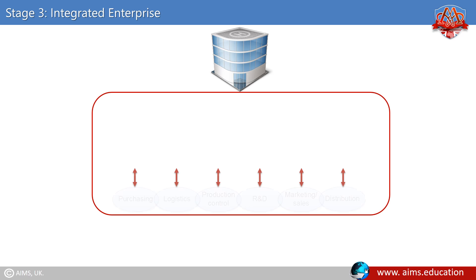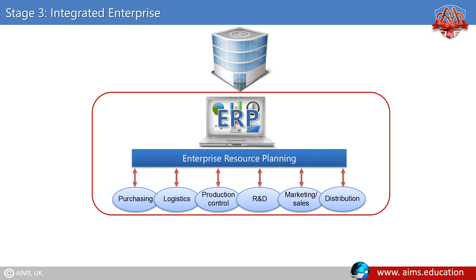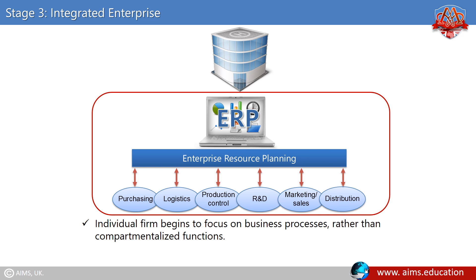In stage 3, the integrated enterprise, organizations are fully integrated between departments using enterprise resource planning (ERP). This is a prelude to end-to-end supply chain management. Individual firms begin to focus on business processes rather than compartmentalized functions, and a corporate wall links supply chain partners together.